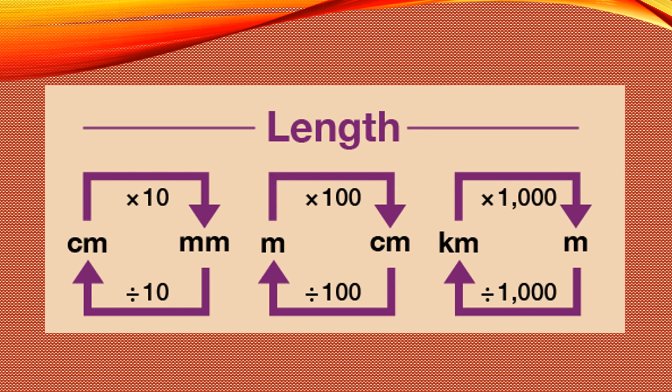We will understand the conversion of length. When we change from centimeter to millimeter, we multiply by 10, because centimeter is bigger than millimeter. When we convert millimeter to centimeter, we divide by 10, because one centimeter equals 10 millimeters. For meter and centimeter: one meter equals one hundred centimeters. When changing meter to centimeter, multiply by 100; when changing centimeter to meter, divide by 100. For kilometer and meter: one kilometer equals one thousand meters. When converting kilometer to meter, multiply by 1000; when converting meter to kilometer, divide by 1000.